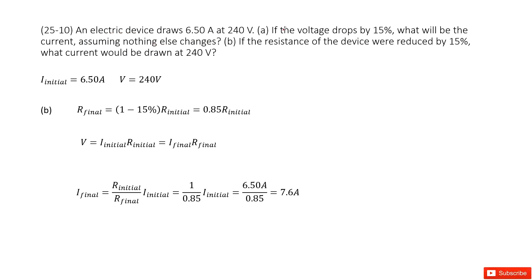The next one asks you: if the resistance of the devices were reduced by 15%, what current would be drawn at 240 volts? In this case, we can see the voltage will never change. The V is a constant. And then the final resistance just drops 15%, that is 0.85 of the initial resistance.